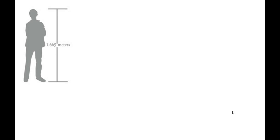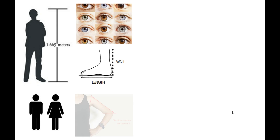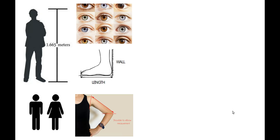For humans, we can measure things like their height, eye colour, foot length, whether they're male or female, and the length from shoulder to elbow. Qualitative data are observations made with our senses — eye colour, hair colour, and sex are qualitative — while measurements such as height, foot length, and shoulder-to-elbow length are quantitative data.